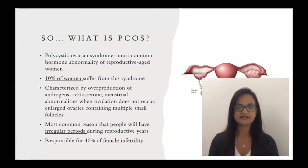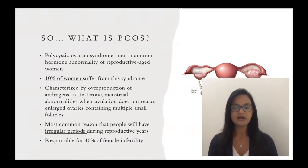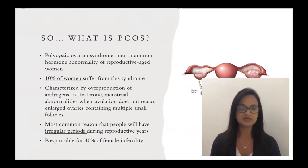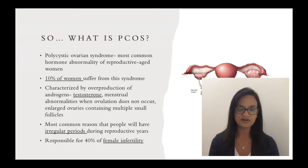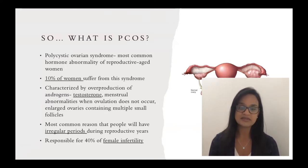What is PCOS? When you're educating patients, you want to have a grasp on the different variables of PCOS. It's one of the most common hormone abnormalities of reproductive age women — almost 10% of women suffer from the syndrome. The characterization of PCOS is around not only androgen production, but also phenotypic stimulation. The overproduction of androgens such as testosterone, plus menstrual abnormalities when ovulation does not occur, and enlarged ovaries containing multiple follicles is the premise of what PCOS is, but it is actually much more complex. PCOS is the most common reason for irregular periods and is responsible for 40% of female infertility.